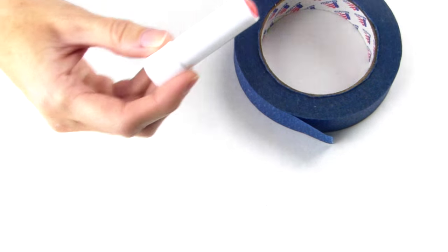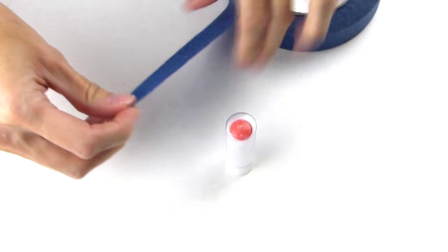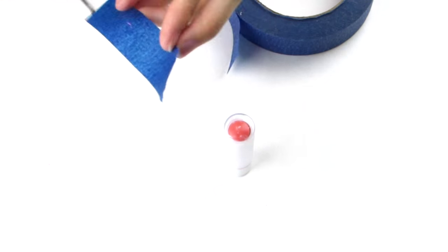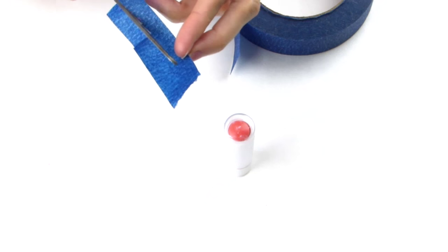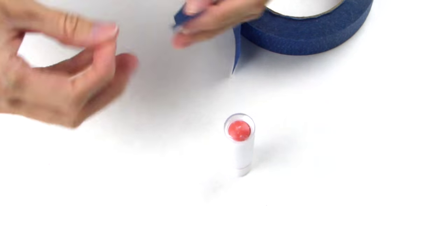Now that you have the label removed, we are going to want to grab some painters tape and tape off the bottom as well as a little bit on the clear part, and I will show you how to do that.